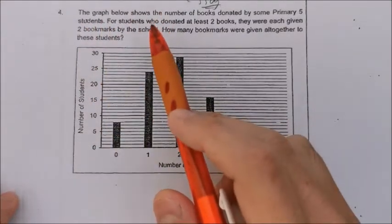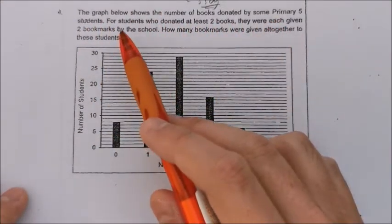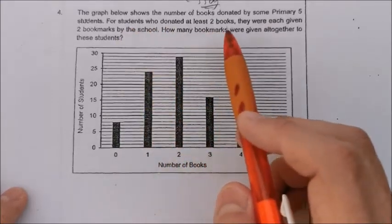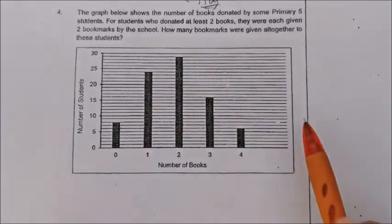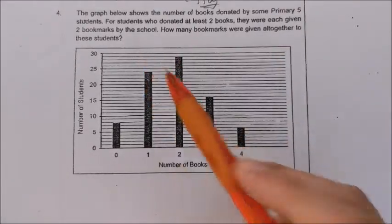Question four. The graph shows the number of books donated by some P5 students. For students who donated at least two books, they were each given two bookmarks by their school. So how many bookmarks were given all together to these students?